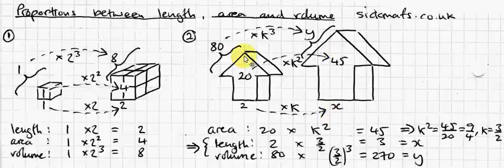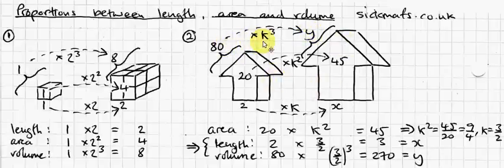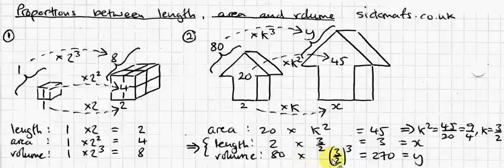Now, if I'm trying to work out the volume of this, and I know the volume of that, I simply have to do 80 times k cubed is y, the volume of this object. So, 80 times k cubed, well, 80 times k cubed is 80 times 3 over 2 cubed. Now, if you don't know what that is, well, 3 cubed is 27, 2 cubed is 8.